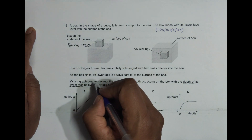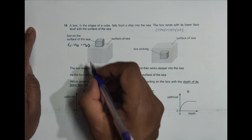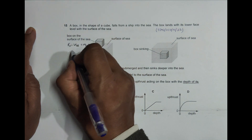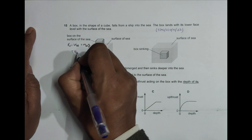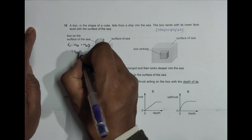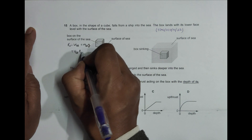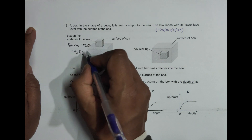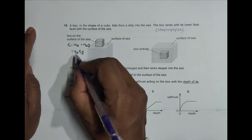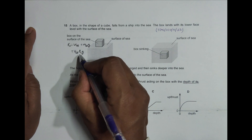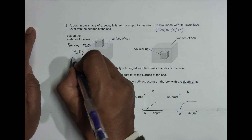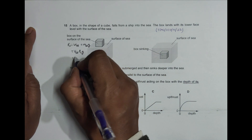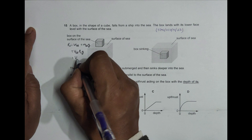Mass of liquid displaced into G equals volume of liquid displaced into density of liquid into G, because mass equals volume into density. This becomes equal to the volume of the immersed portion.